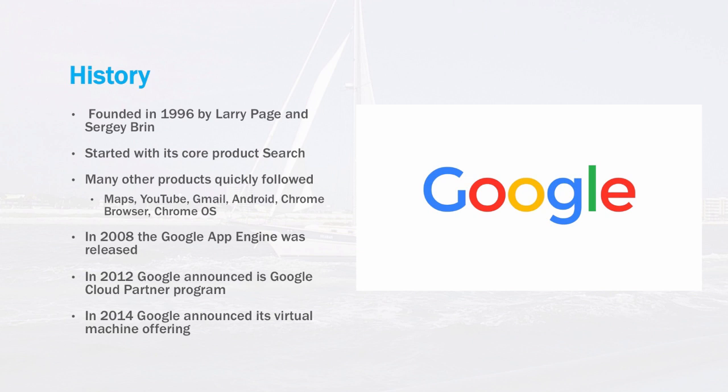These products include Google Maps, YouTube, Gmail, the Android Operating System, the Chrome Browser, and the Chrome Operating System. In 2008, the Google App Engine was released and was really the first part of what was to become the Google Cloud Platform. In 2012, Google announced its Cloud Partner Program. In 2014, Google announced Virtual Machine Offering, which has really opened the way for the Google Platform as it exists today.